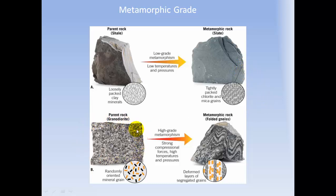A parent rock of granodiorite, having properties between a granite and a diorite, under high metamorphism and strong compressional forces, can become gneiss. This is actually a folded gneiss where you see bands where the minerals start to separate out by mineral type and form bands.